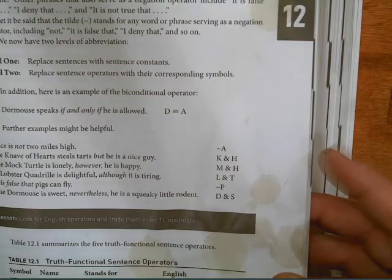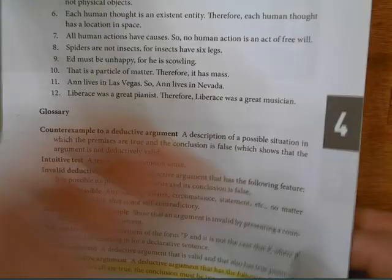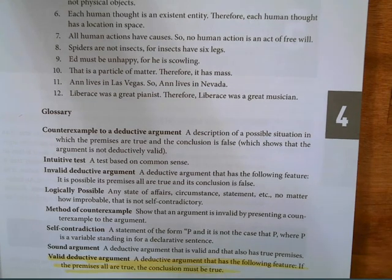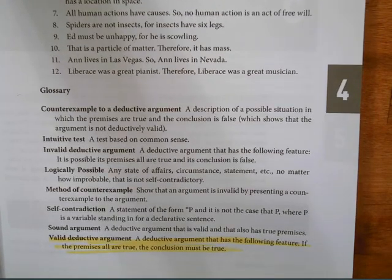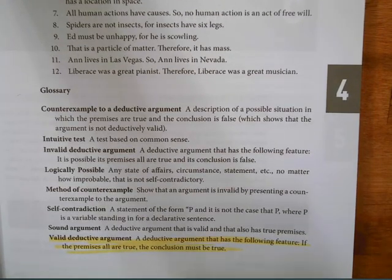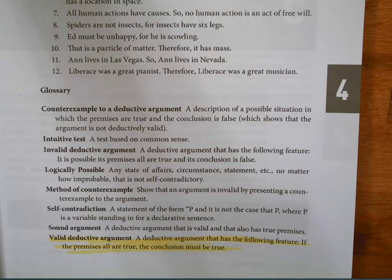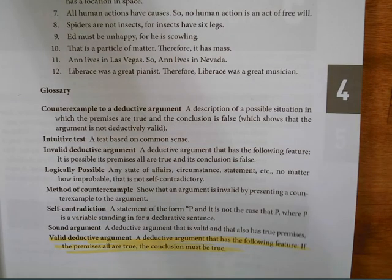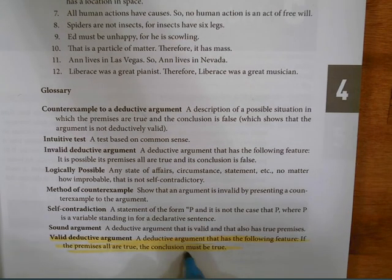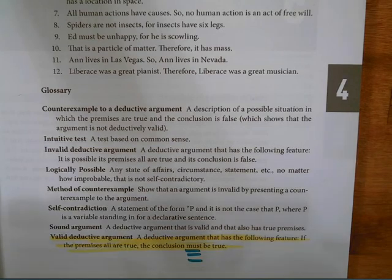Let's flip back to chapter four here. And I've got it highlighted. It says a valid deductive argument is a deductive argument that has the following feature: If the premises are true, the conclusion must be true. And I'd even triple underline that. Has to be true. Could not be any other way.